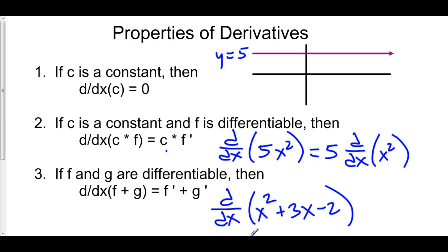If you took the derivative of x squared plus 3x minus 2, that's just the derivative of x squared plus the derivative of 3x plus the derivative of negative 2.